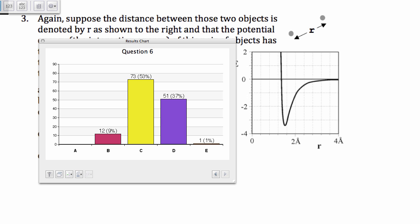So when you're at large values of r, when these two things are far apart, they can decrease their potential energy by getting closer together. And when they are close together, like right here, they can decrease their potential energy by getting farther apart.